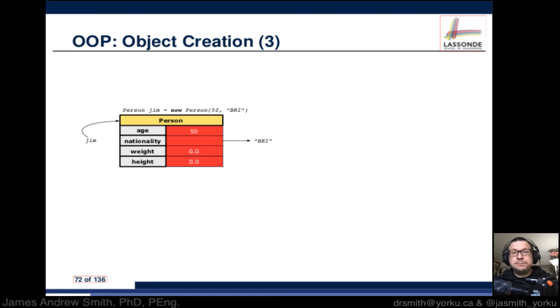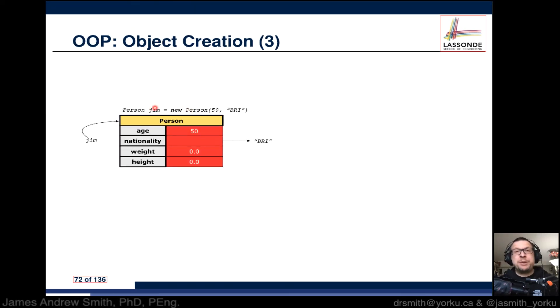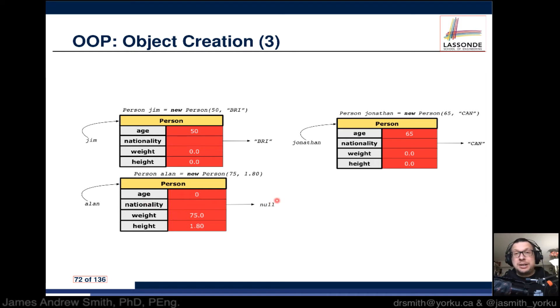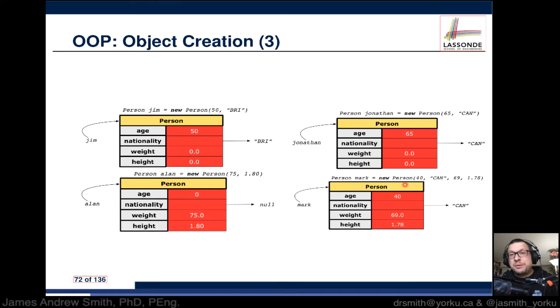You'll notice that we only did that for Mark. We didn't do it for Alan, Jonathan, or Jim. The other values will basically be initialized to default values, like zero. What happens if we visualize this? If we visualize it, we take a look at what happens to Jim. Jim is a Person, the age was specified, the nationality was specified, but weight and height were not specified so they'll be initialized to zero. Jonathan, same deal: age was specified, nationality was specified, but weight and height were not. Alan had a nationality that was initialized to null, age to zero because no age was specified, but weight was 75 and height was 1.80. Finally, Mark: everything was specified—age, nationality, weight, and height.